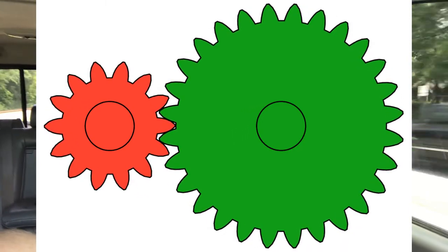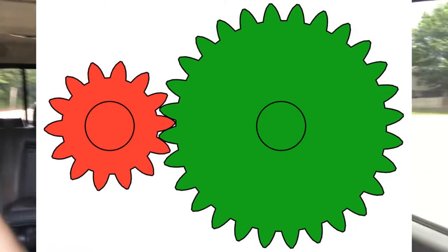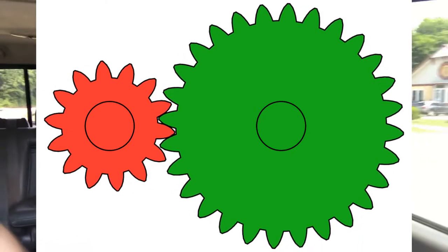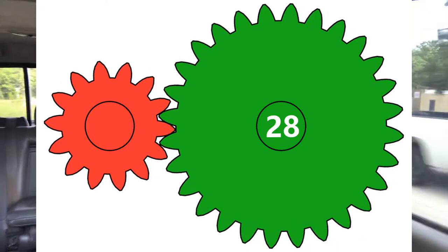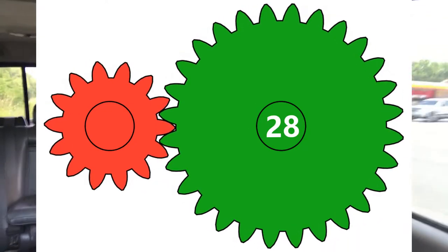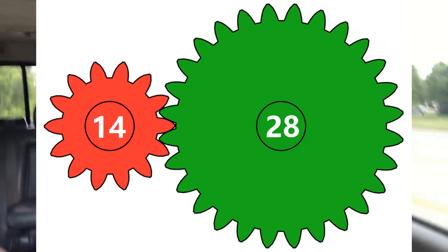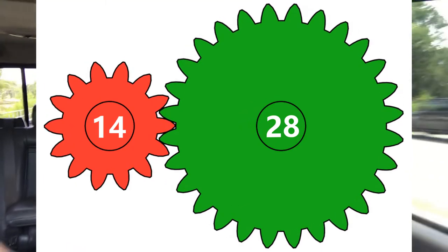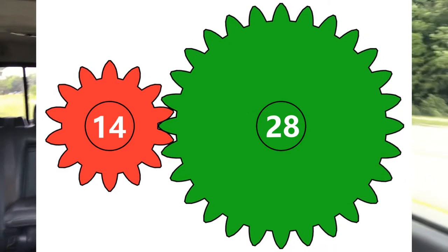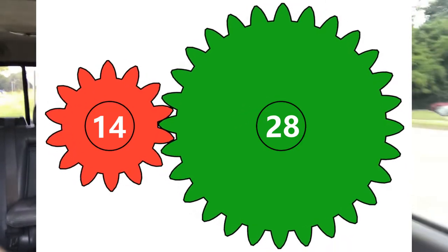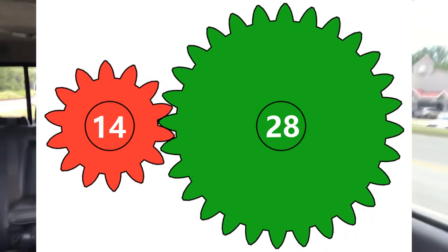The green gear has exactly 28 teeth and the red gear has 14 teeth. The green gear is twice the circumference — twice the distance around — as the red gear, so the red gear is half the size of the green gear.